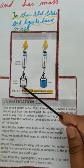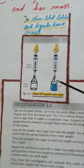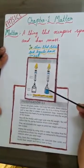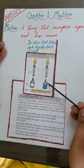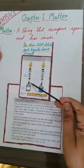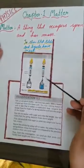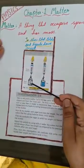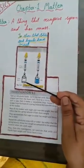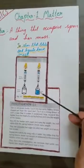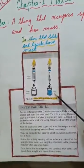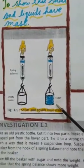Make a beaker shape. From the lower part tie a strong thread in such a way that it makes a suspension loop. Now suspend these beakers from the hook of the spring balance and note the weight of the beaker. First beaker - this beaker is empty. Note the weight of the empty beaker. Now in this second beaker fill the sugar. You can fill sugar, you can take salt also, any solid thing you can take. And now note the weight.